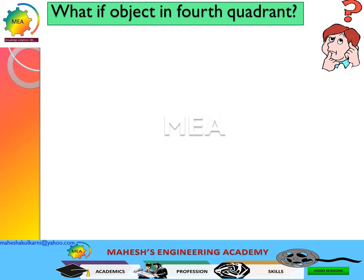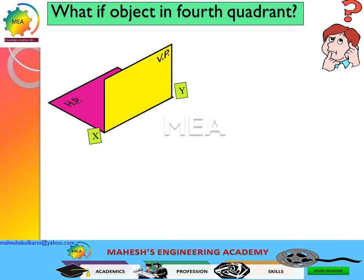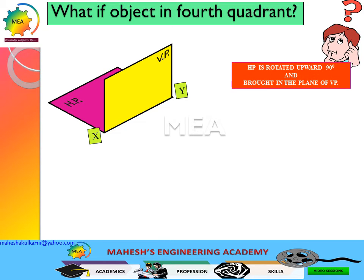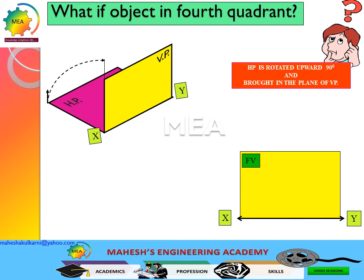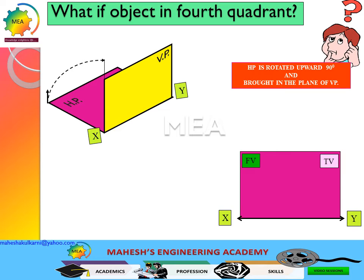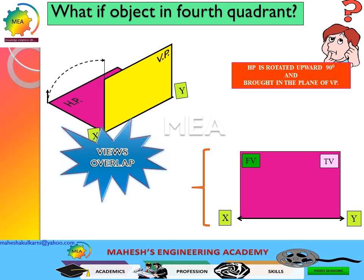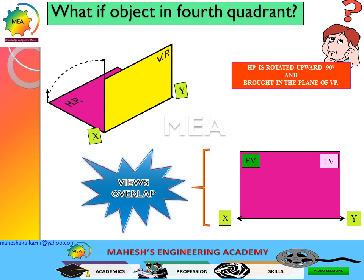What if the object is placed in the fourth quadrant? Consider the vertical plane and horizontal plane. As per the principle of projections, the horizontal plane is rotated 90 degrees upwards. The front view is projected on the vertical plane. When the horizontal plane is rotated 90 degrees, the top view and front view overlap. So when the object is placed in the second or fourth quadrant, the front view and top view overlap, and we cannot have a clear view.